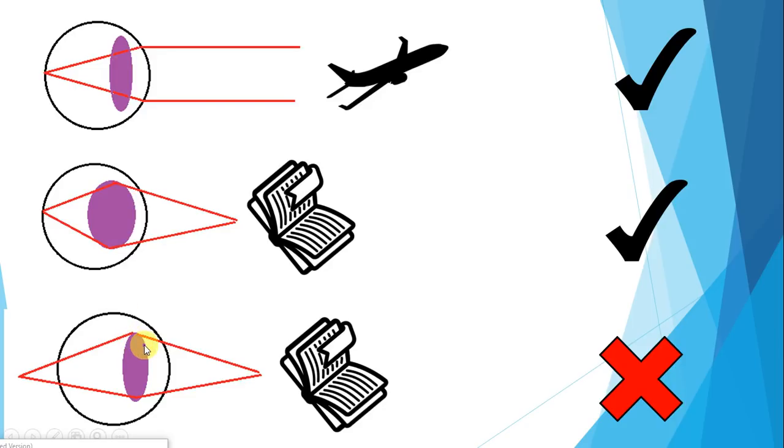Now imagine if the lens shape didn't change, and the lens was just as thin as the first example when you're looking at something up close. If it didn't change shape, then there's not enough power to refract the rays coming from the book, and it gets focused somewhere we don't want it to. We want it focused right at the back of the eye, but here you've got an out-of-focus ray, and that will give us blurry vision.